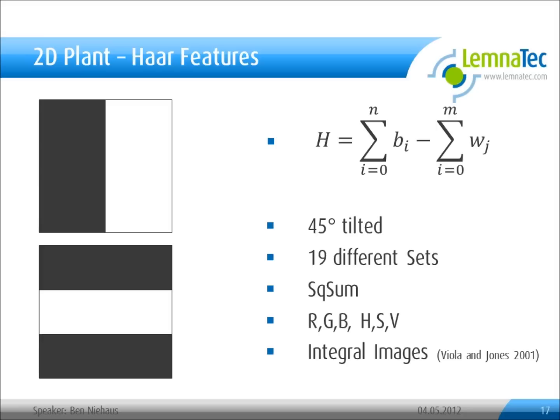To create the probability mask, we use so-called Haar features. A Haar feature is defined as the sum of pixel values on the gray area minus the sum of pixel values on the white area. It was first introduced by Viola and Jones. We used about 19 different Haar features, also tilted by 45 degrees, in various sizes and on various color channels.